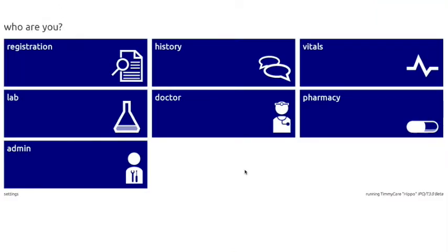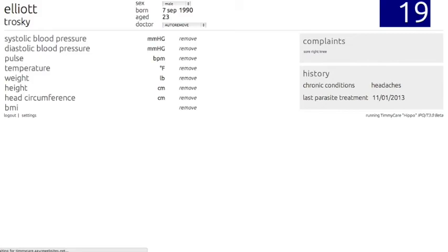The next step is to take some vitals. Click on the vitals module and we can record this valuable information. As before in the history section, you will again be prompted for the patient's in-clinic ID number. Once you've logged in to that patient, you can take the blood pressure and heart rate and record the information as prescribed. You can also fill in temperature, weight, height, head circumference, and BMI. The complaints, chronic conditions, and last parasite treatment from the history section show up on this patient's TimiCare page.